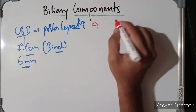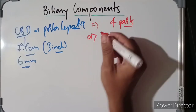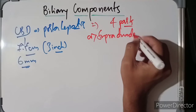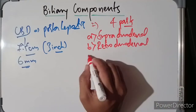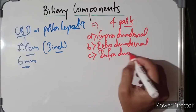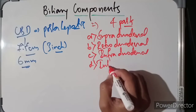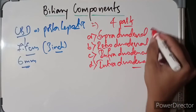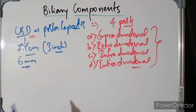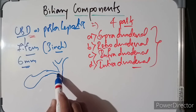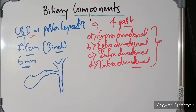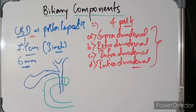The common bile duct is divided into four parts: the supraduodenal part, the retroduodenal part, the infraduodenal part, and the intraduodenal part. The gallbladder opens with the cystic duct, joined by the right and left hepatic ducts along with the common hepatic duct, forming the common bile duct, which then goes into the duodenum along with the pancreatic duct.